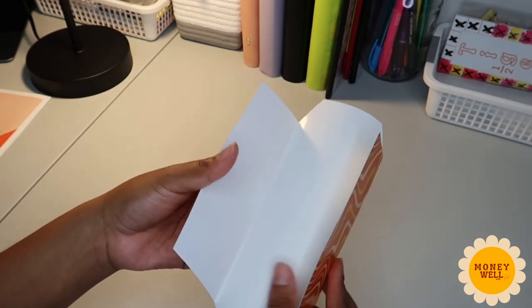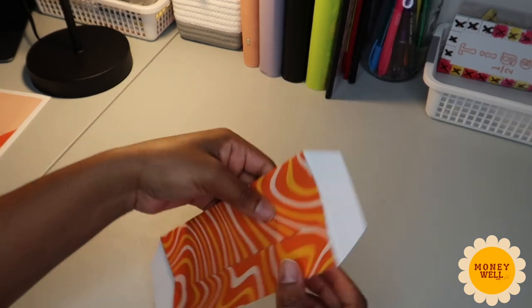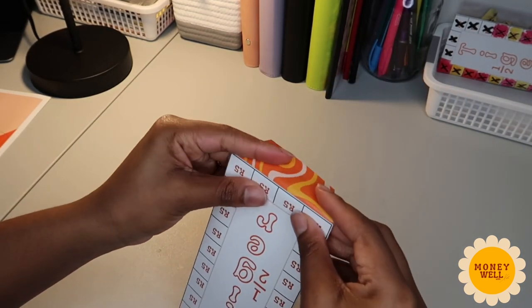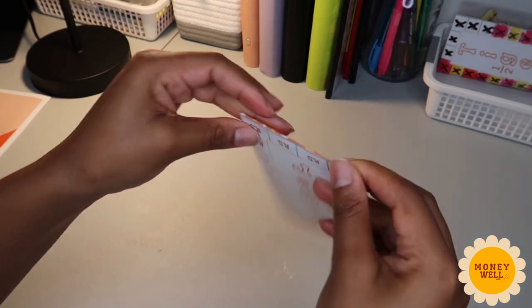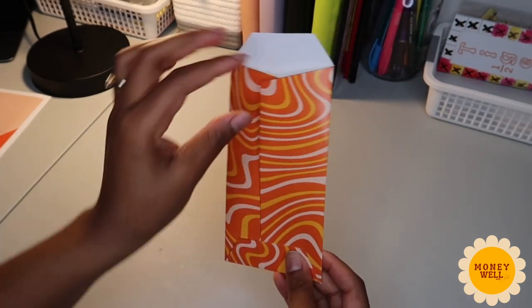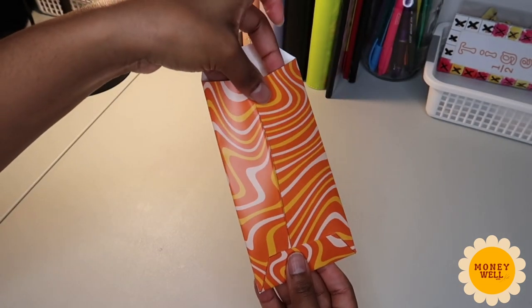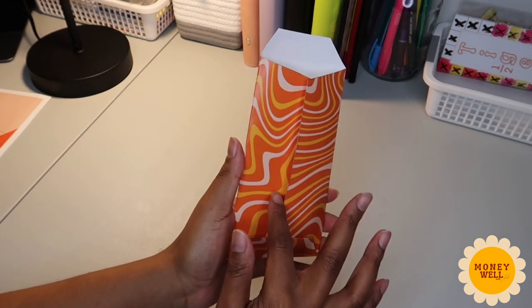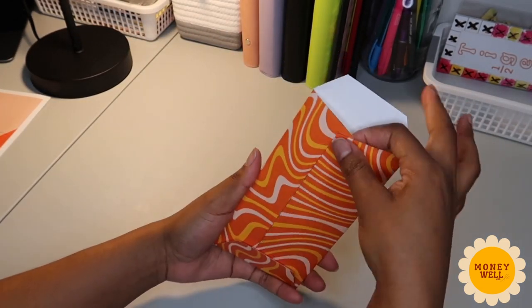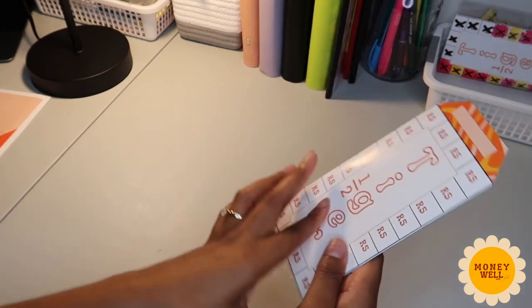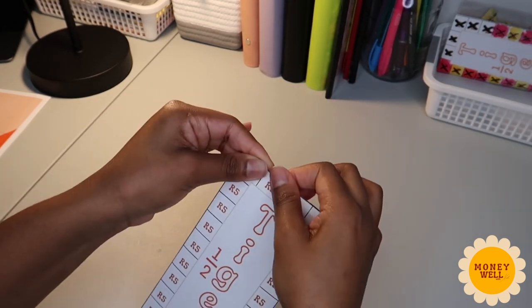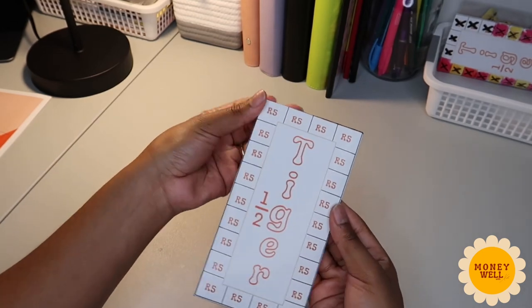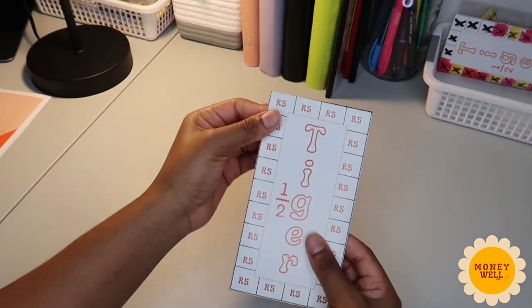Okay, this is how it looks at the back. And then you can use glue or sticky tape so that it doesn't open and then you have your envelope.